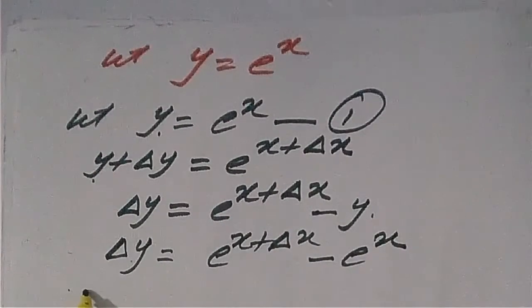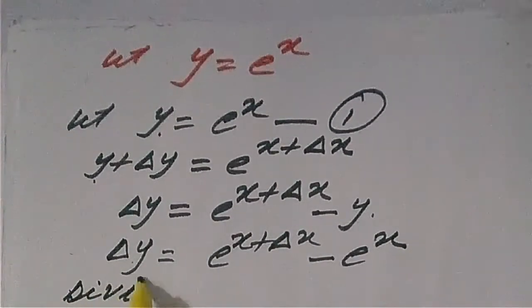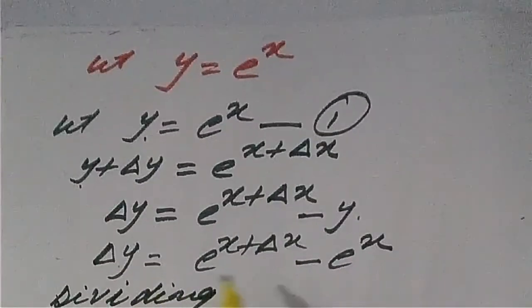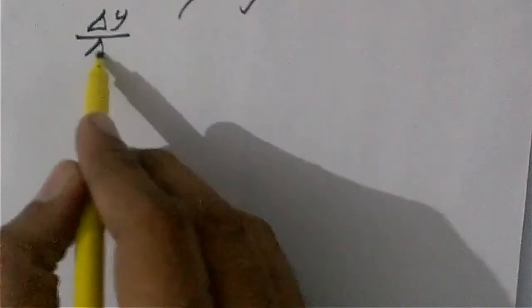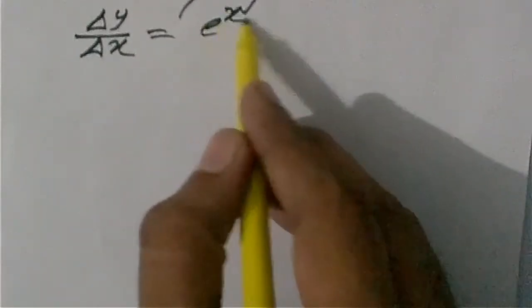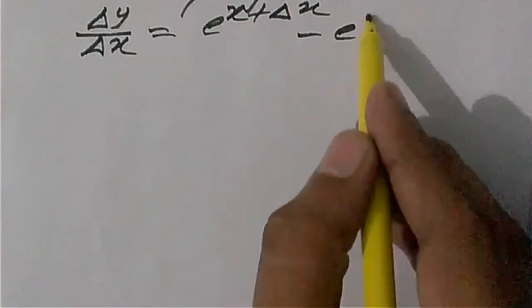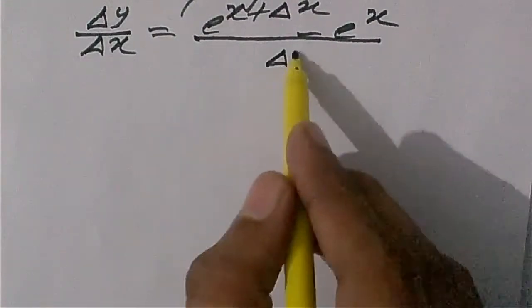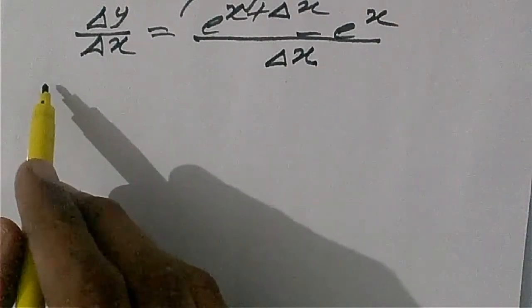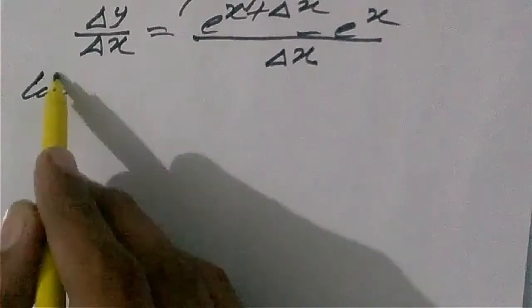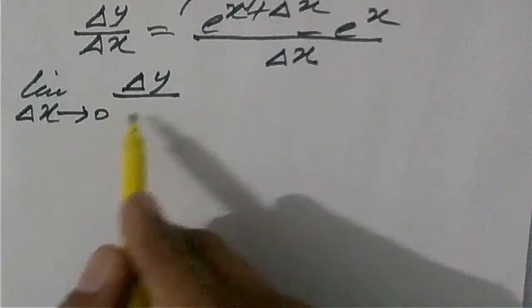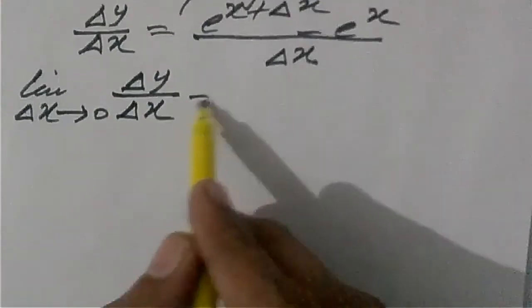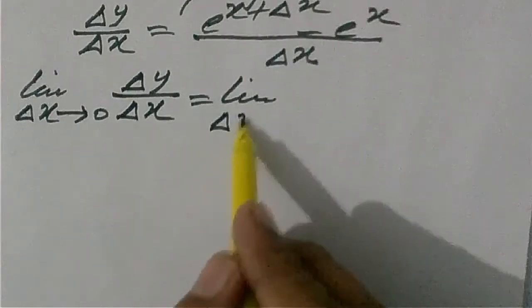Now dividing both sides by delta x, we have delta y upon delta x is equal to e raised to the power x plus delta x minus e raised to the power x, divided by delta x. Taking the limit as delta x tends to 0 on both sides, we have: limit delta x tends to 0 of delta y upon delta x.